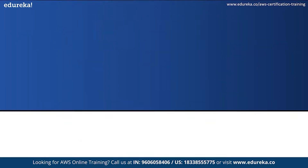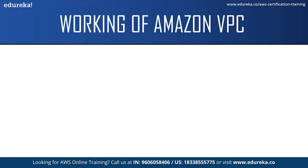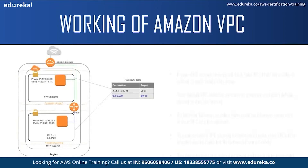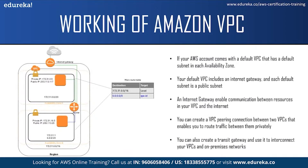Now that you have some idea about subnets and route tables, let us move on to the working of VPC. If your account was created after December 4th, 2013, your account comes with a default VPC that has a default subnet in each availability zone — we will see this in the demo part. Your default VPC includes an internet gateway and has the benefits of advanced features provided by EC2-VPC and is ready for you to use. If you launch your instance in a default VPC and do not specify a subnet, the instance is automatically launched in your default subnet, which is a public subnet.